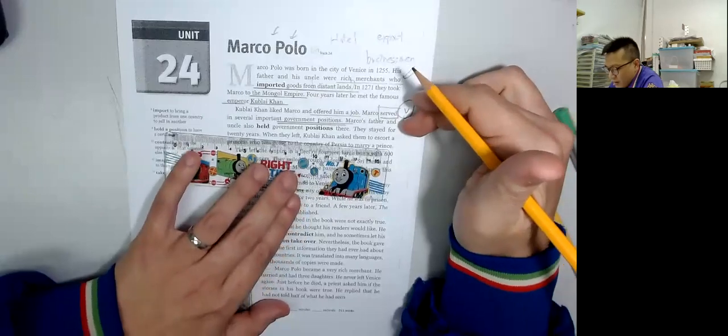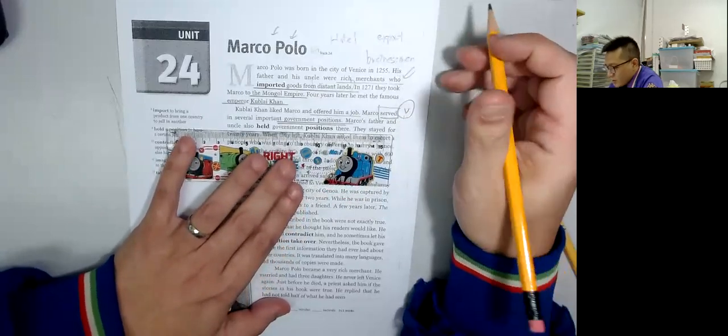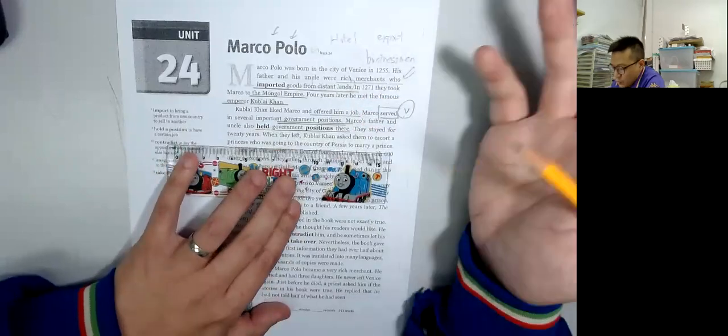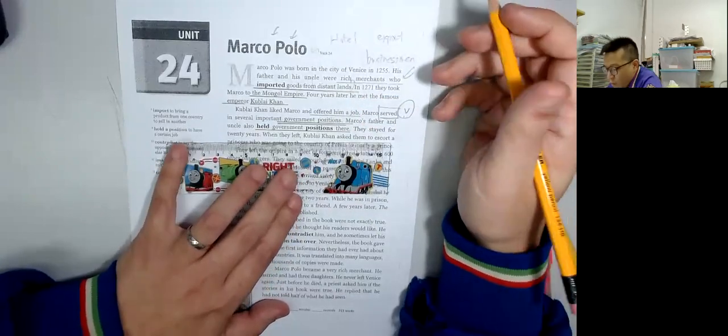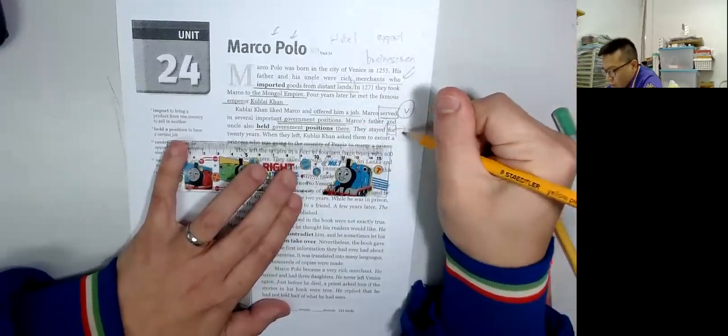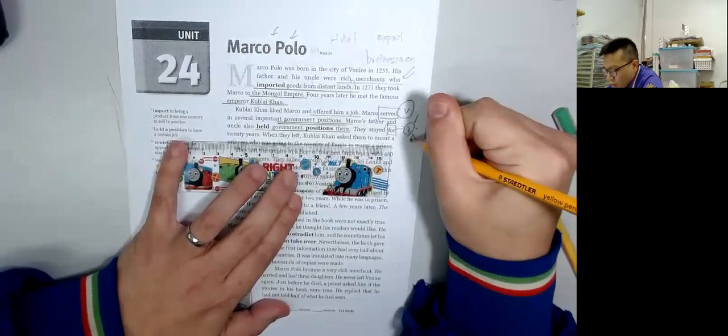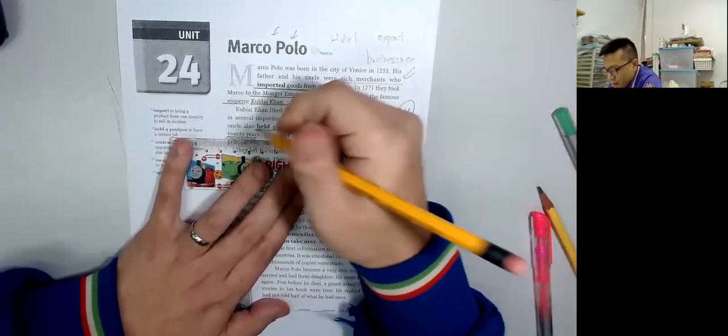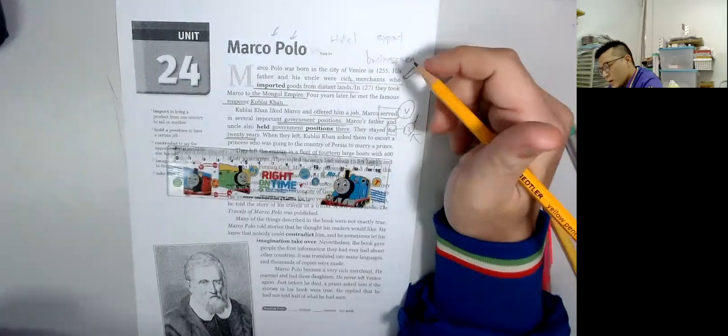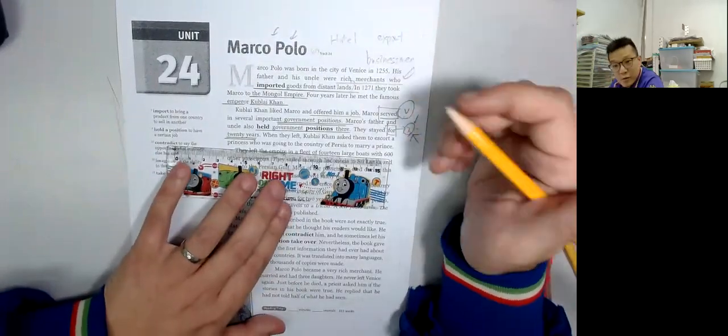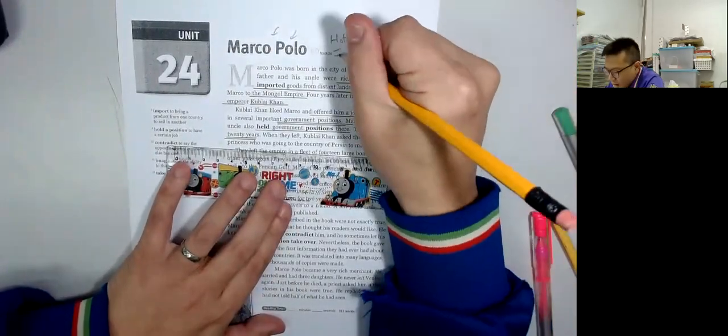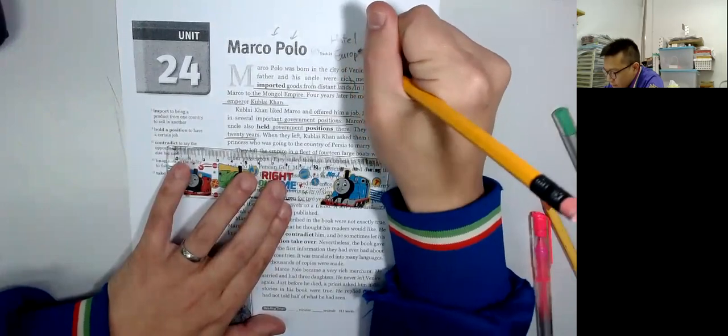His father and uncle also held government positions. They stayed full. How long have they spent? In the Mongol Empire, he lived for 20 years in China, in Europe.